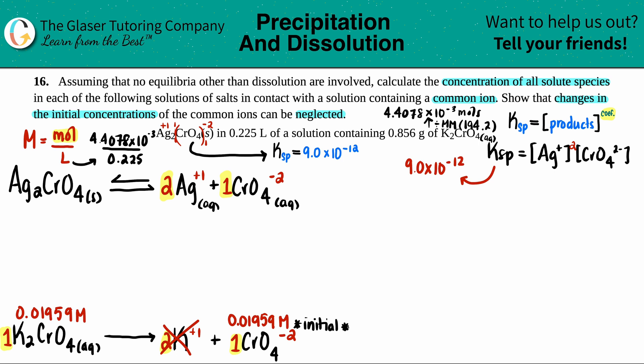This was the initial solution. As soon as you say initial, it brings back the ICE table. Solids, nobody cares in terms of the ICE table because none of them are plugged into the equation. This is your initial for your chromate, 0.01959. You didn't start with any Ag, so zero.